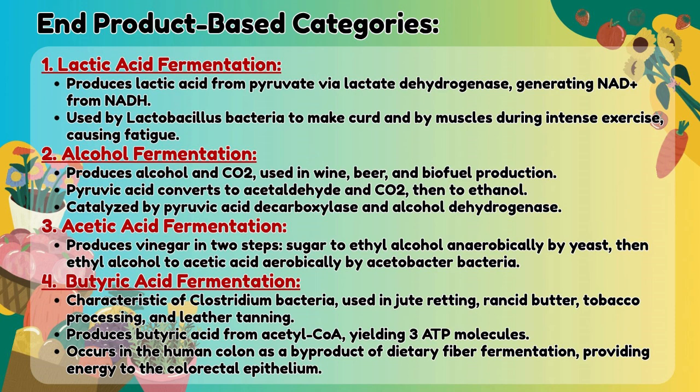Acetic acid fermentation produces vinegar in two steps: sugar to ethyl alcohol anaerobically by yeast, then ethyl alcohol to acetic acid aerobically by Acetobacter bacteria. Butyric acid fermentation is characteristic of Clostridium bacteria, used in jute retting, rancid butter, tobacco processing, and leather tanning. It produces butyric acid from acetyl alcohol, yielding three ATP molecules, and occurs in the human colon as a byproduct of dietary fiber fermentation, providing energy to the colorectal epithelium.